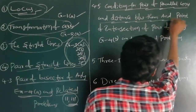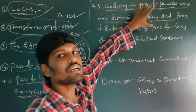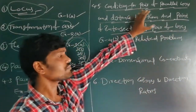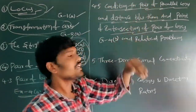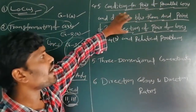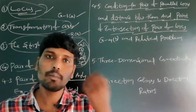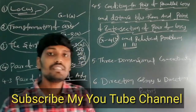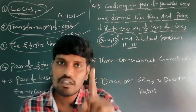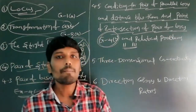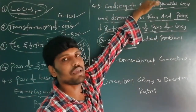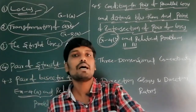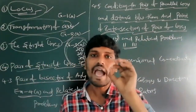The next deleted topics are: Condition for Pair of Parallel Lines, Distance Between the Parallel Lines, and Point of Intersection of Pair of Lines. These three topics belong to Exercise 4b, Section 2 and Section 3. In Exercise 4b, Section 1 has no deletions, but Sections 2 and 3 have problems and examples related to these topics deleted.